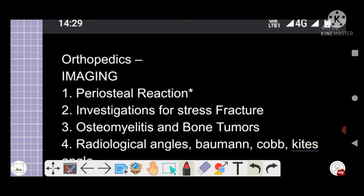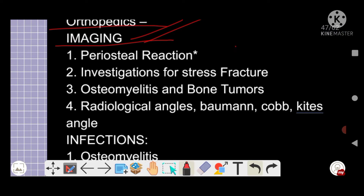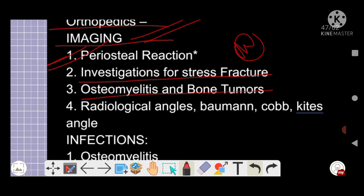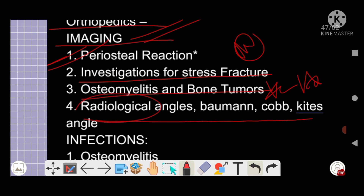Now discussing orthopedics — you must be aware of all the images. Important topics include osteomyelitis, which we discussed a few days ago: the periosteal reaction, the involucrum formation, sequestrum — everything must be clear. The investigations for stress fractures are important. Osteomyelitis and bone tumors are very important topics. Different radiological angles: Bohman's angle, Cobb's angle, Kite's angle — these are very important five-star topics.